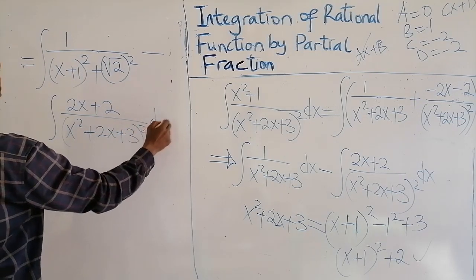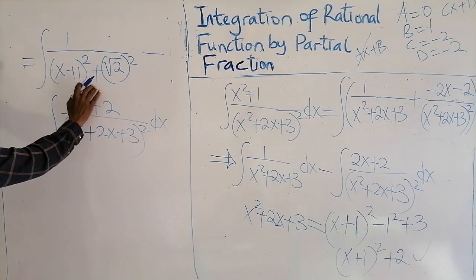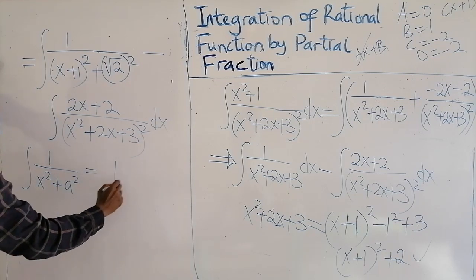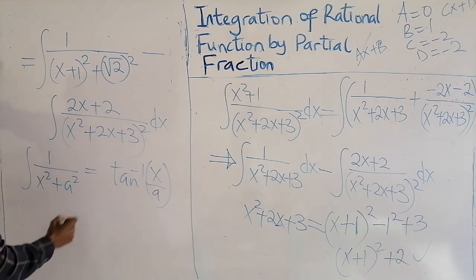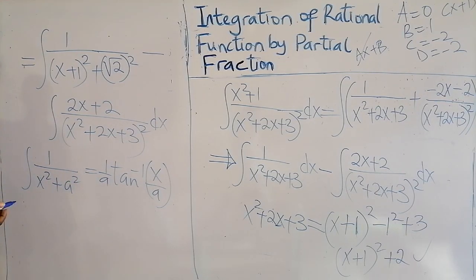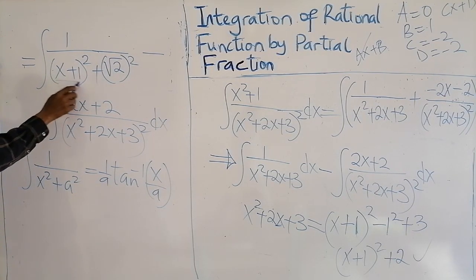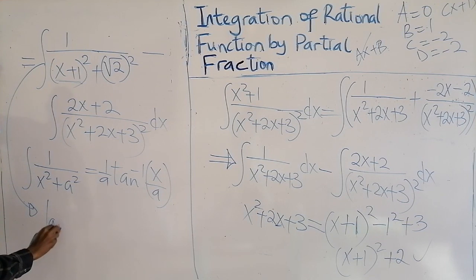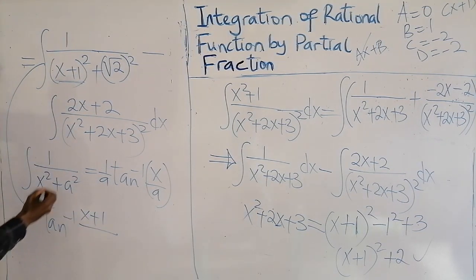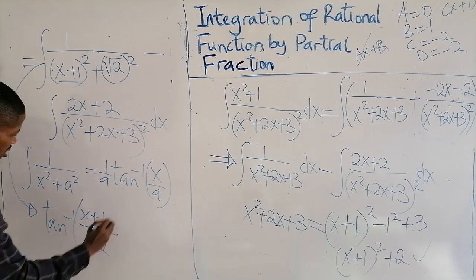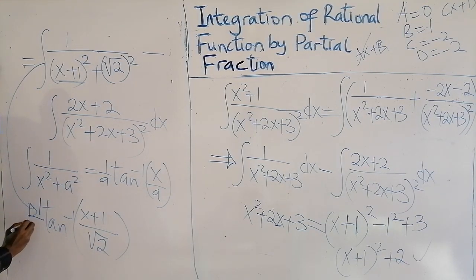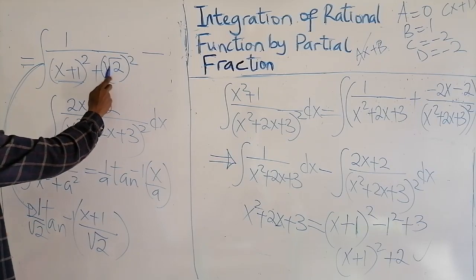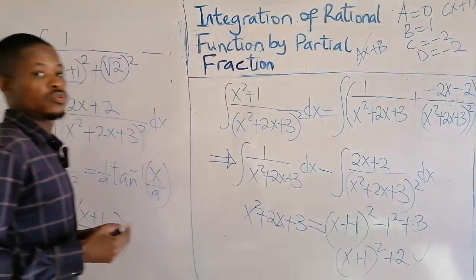From the table, the integral of 1 over (x² + a²) gives (1/a) arctan(x/a). Applying this here, the integral of 1 over ((x+1)² + 2) gives (1/√2) arctan((x+1)/√2). Here a² = 2, so a = √2. This handles the first part of the integral.